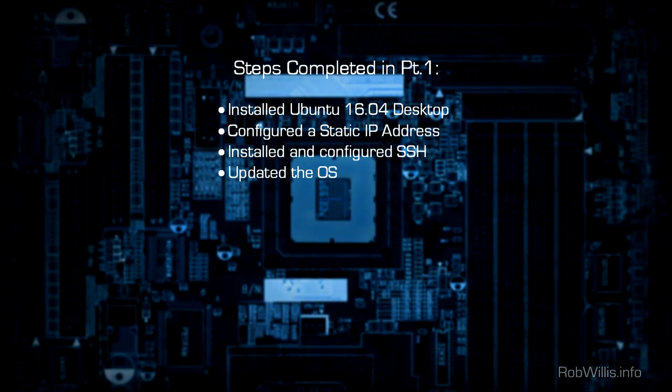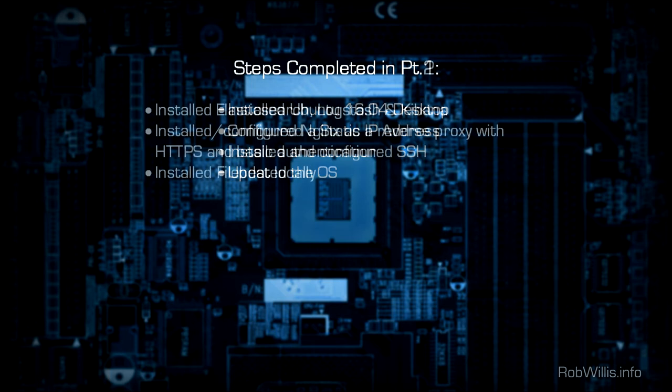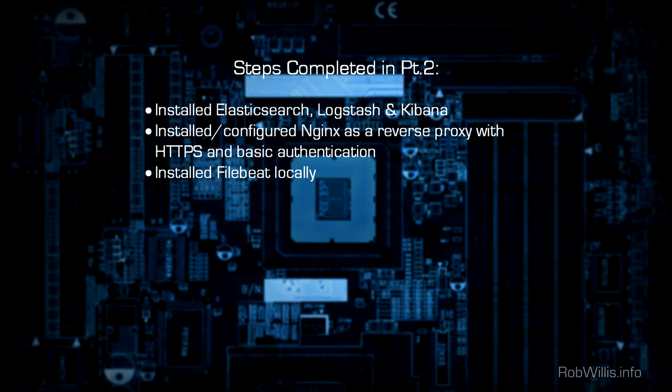In part 1 of the video series, I covered installing Ubuntu 16.04 desktop, configuring a static IP address, installing and configuring OpenSSH, as well as updating the OS with the newest packages. In part 2, I installed Elasticsearch, Logstash, and Kibana to get our ELK stack up and running. I also installed and configured Nginx to act as a reverse proxy in front of Kibana, and that's going to handle our HTTPS connection as well as the basic authentication.